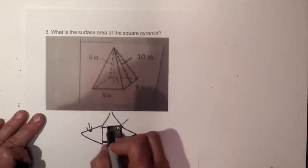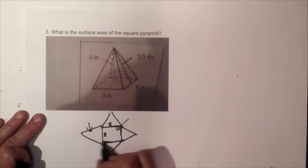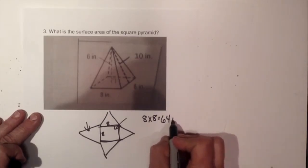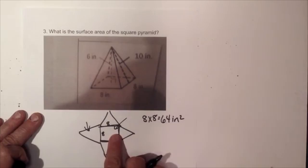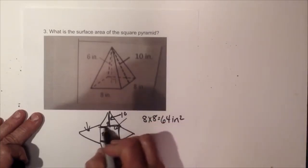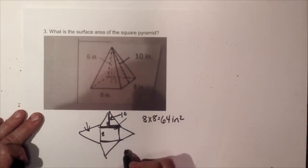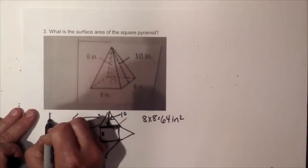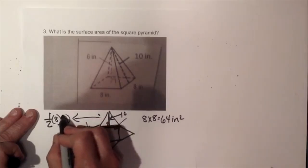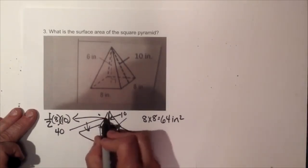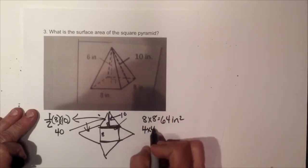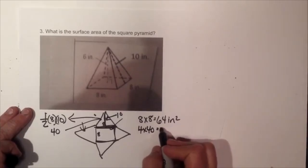The square base is 8 by 8, so its area is 64 square inches. For each triangular face, the height is 10 and the base is 8. So one-half of 8 times 10 is 40 square inches per triangle. Since there are four triangles, 4 times 40 equals 160 square inches total for all the triangular faces.